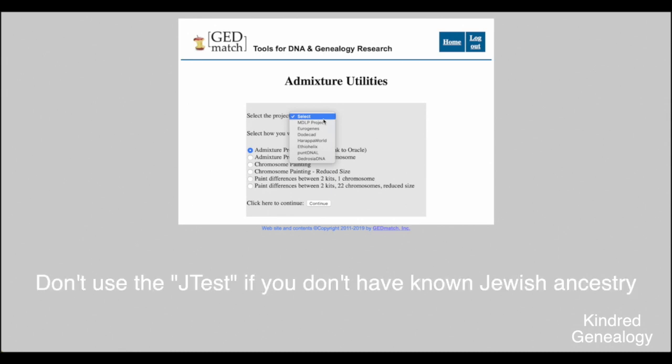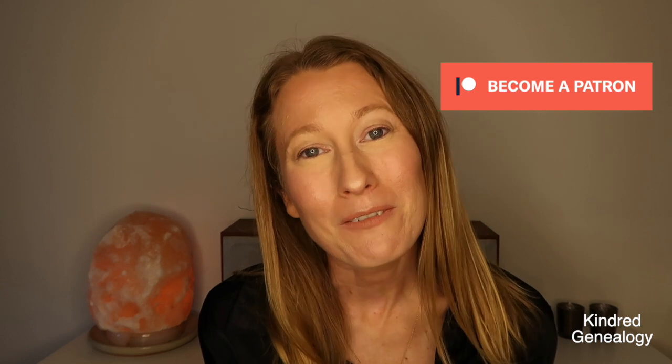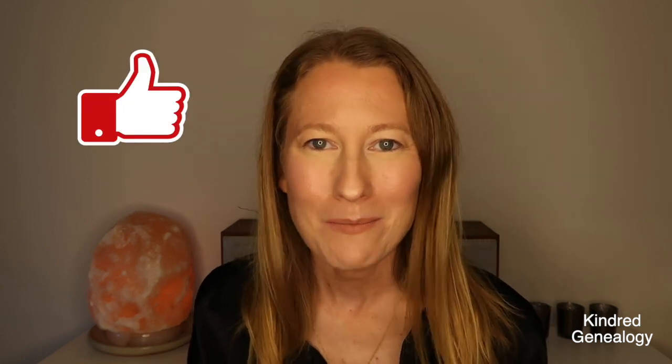One caveat: don't use the J test if you don't have Jewish ancestry, as it can give false results. Also remember — as I've mentioned in my other ethnicity videos — there's no perfect test to prove your ethnicity. All the tests use different sample data so you'll get varied results across different tests. Don't worry about those varied results; just pull all of your results together and see what patterns you can identify. That's it for this video — make sure you subscribe to my channel so you're notified when I upload. Have a great day and good luck with your research!